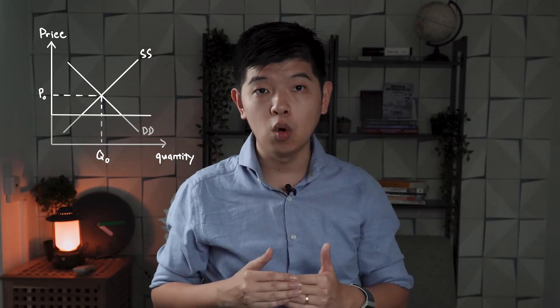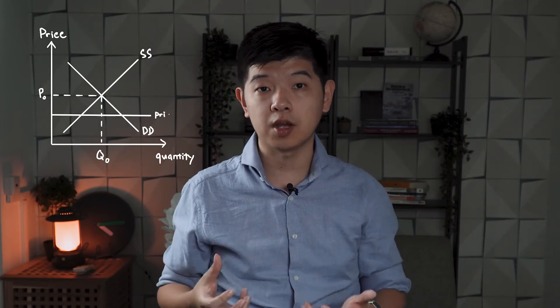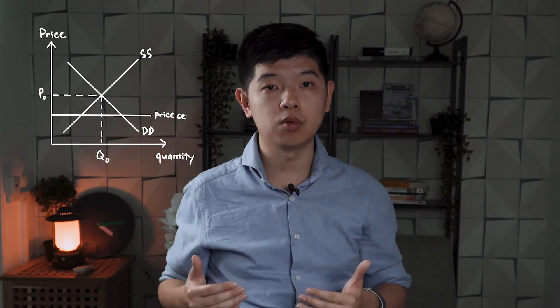I'm going to explain price ceiling in the form of a demand and supply diagram so that you can understand how a price ceiling manifests itself. When we look at a price ceiling on a demand supply diagram, you will want to draw a horizontal line below the equilibrium price, because for a maximum price to be effective it has to be set below the equilibrium price.